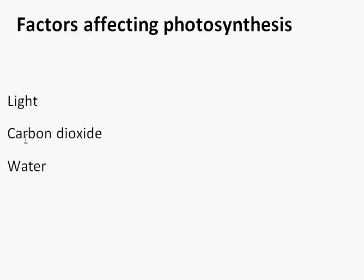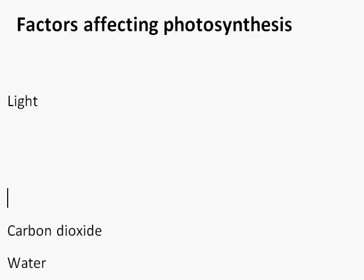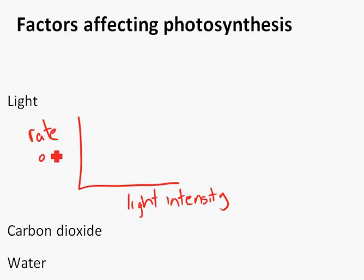Each of those can affect photosynthesis. If we look at light first, we draw a graph of the amount of light—light intensity, good science words—and the rate or speed of photosynthesis. I think we all agree, more light, photosynthesis goes faster.